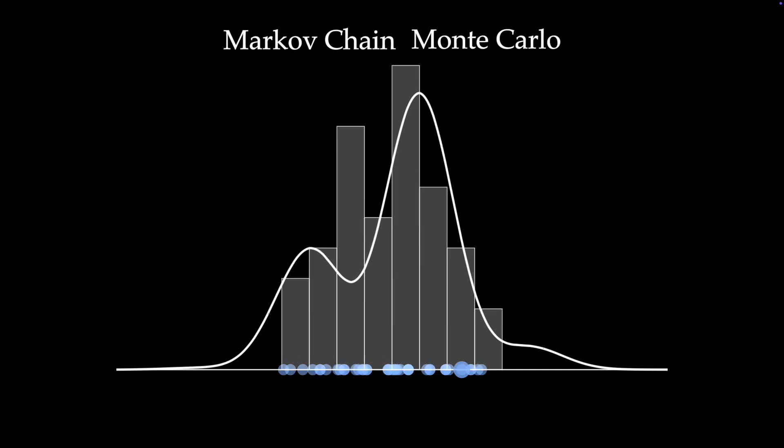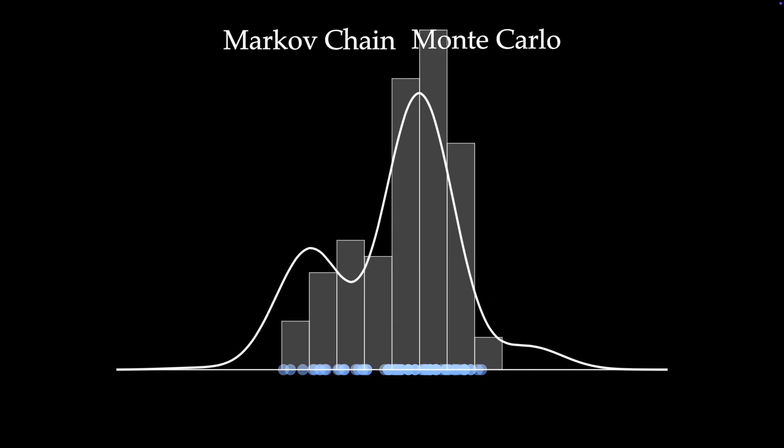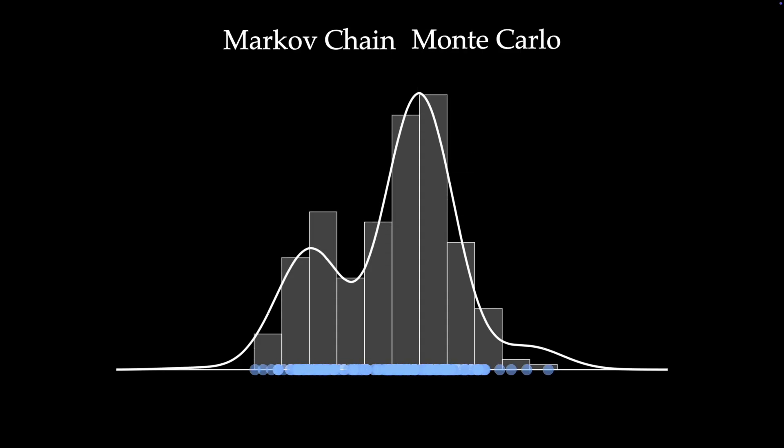So here's what the MCMC algorithm looks like as it performs the same task. In general, it appears to have a pretty similar strategy. It's selecting samples in high density regions more often than in low density regions. And after a bit, it's beginning to look like it's converging to the correct density.